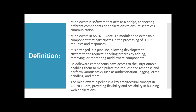Let's start with the definition of middlewares. Middleware is a software that acts as a bridge connecting different components or applications to ensure seamless communication. Middleware in ASP.NET Core is a modular and extensible component that participates in the processing of HTTP requests and responses. It is basically arranged in a pipeline, allowing developers to customize the request handling process by adding, removing or reordering middleware components.